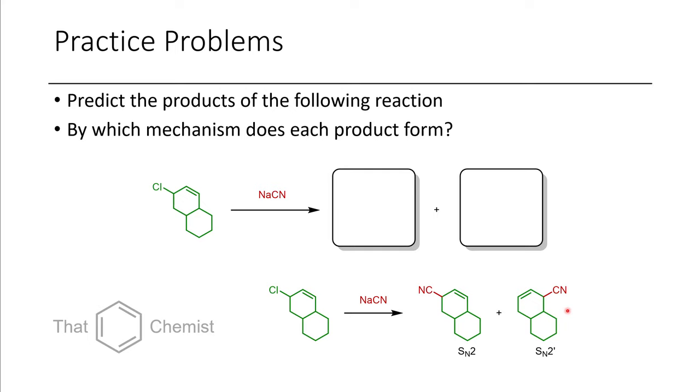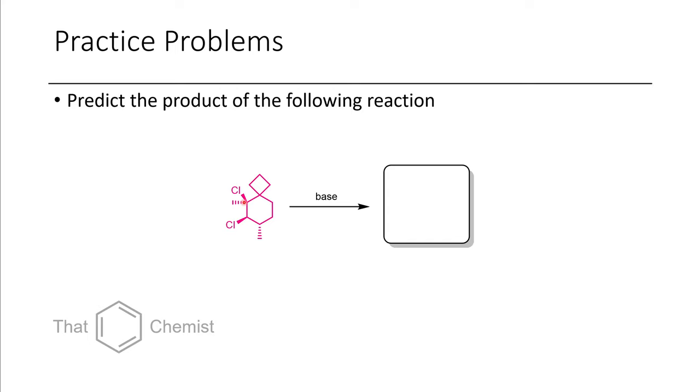Now in the next problem, I show this compound here with a chloride here and here, and I ask, what would the product of the following reaction be? And so here we can see that the orange chloride is actually trans, or anti, to this purple proton here, and the blue chloride is cis to this green hydrogen here.